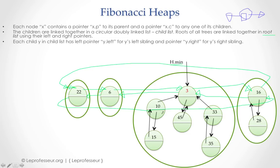So let's connect these child nodes together in a child list. 45's left sibling is 10, 10's left is 33, 33's left is 45. 45's right is 33, 33's right is 10, and 10's right is 45. We came back to 45.